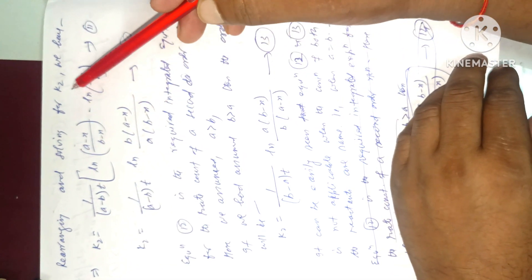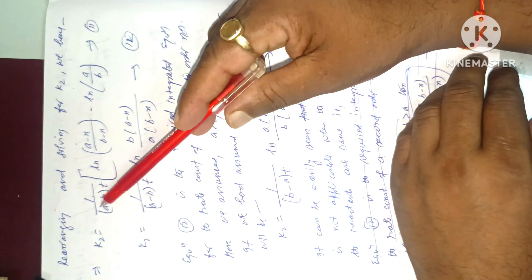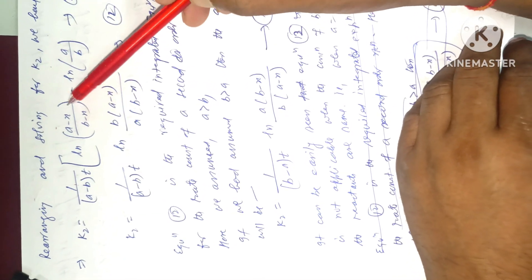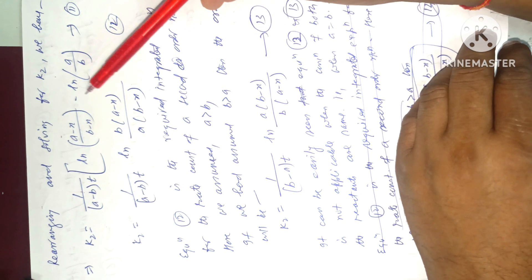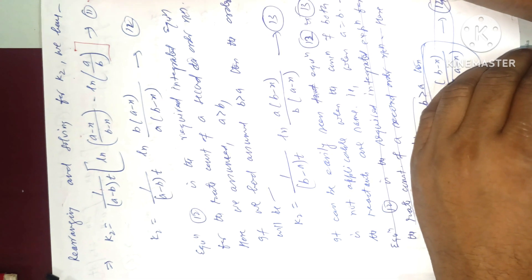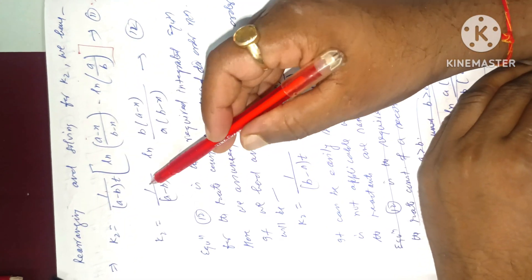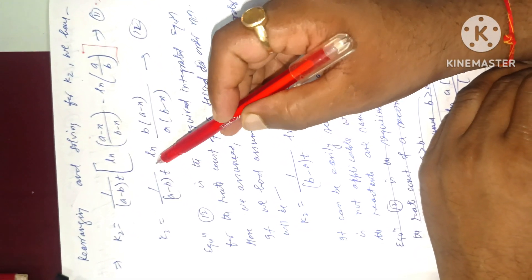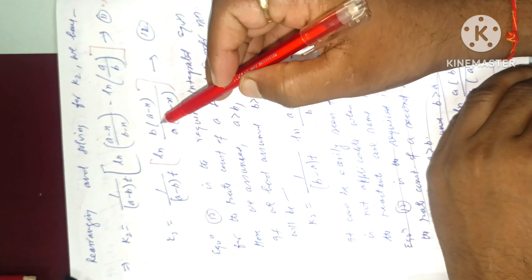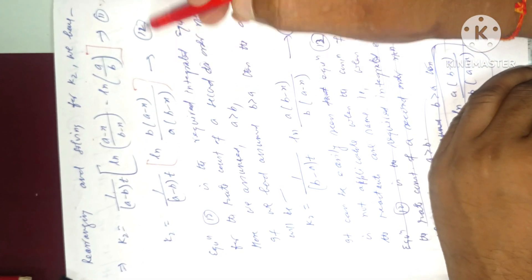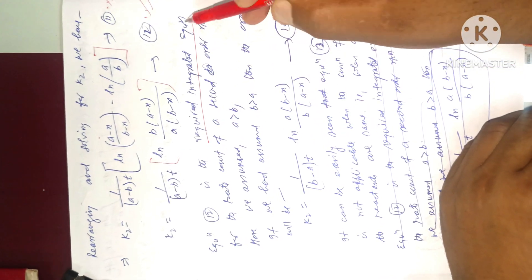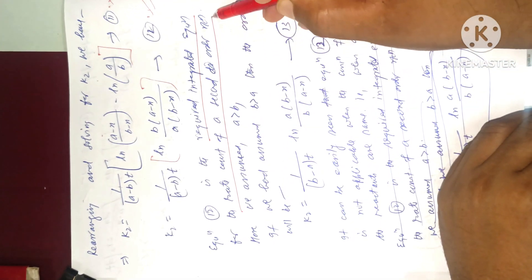Rearranging and solving for k₂, we have: k₂ = 1/[(a − b)t] × ln[(a − x)/(b − x)] − ln(a/b), equation 11. This can also be written as: k₂t = 1/(a − b) × ln[b(a − x) / a(b − x)], equation 12. Equation 12 is the required integrated rate equation for the rate constant of a second order reaction.